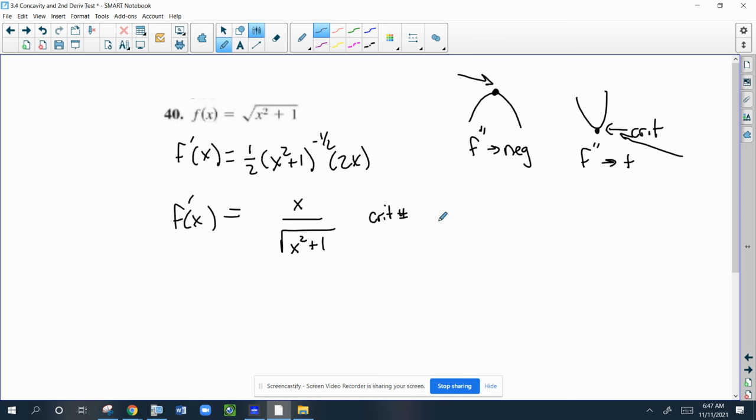It's where the derivative equals zero. So the top of the function equals zero, X equals zero. Or where the derivative is undefined. And X squared plus one will never be zero, so we're good here. That's the only critical number.